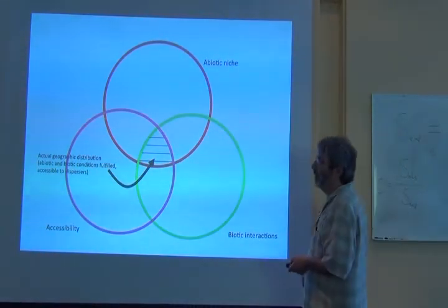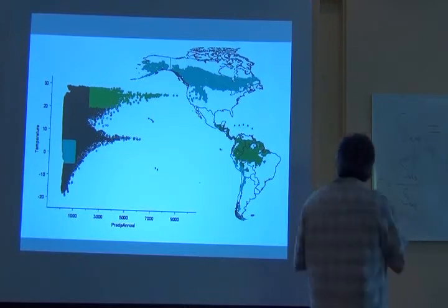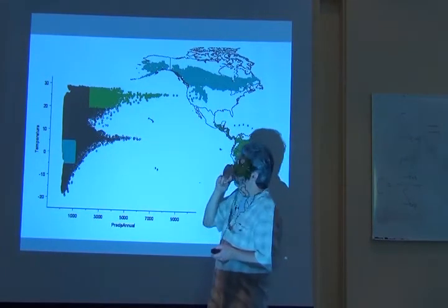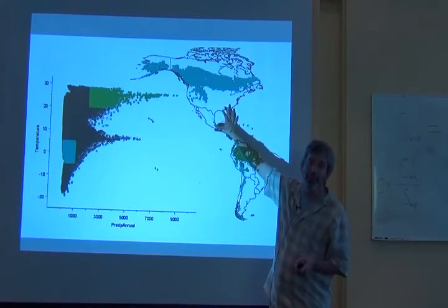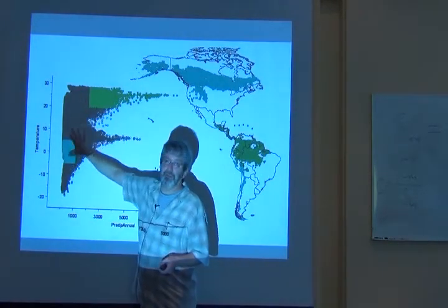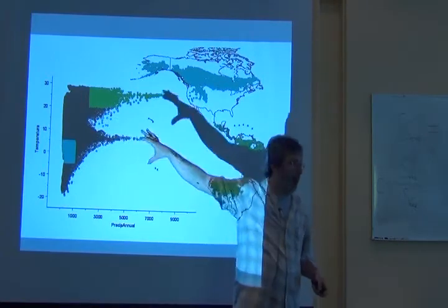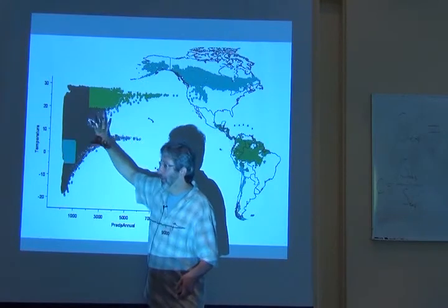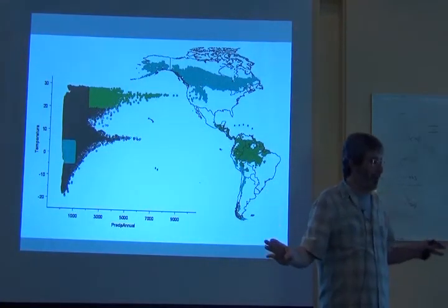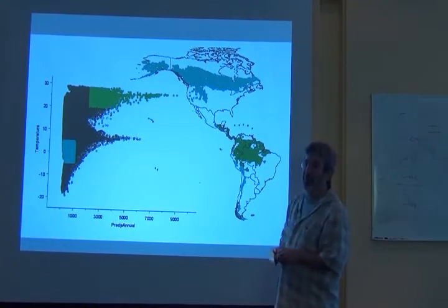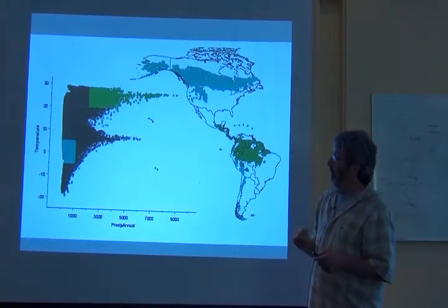But what I want you to think about is this. What we're doing in the niche modeling world is we're essentially using occurrences in geography to identify sets of environments where the species has occurred. We then use some trick to fit a model around the occurrences in environmental space. And then we use that model to come back to geography. That's the whole process. But again, we're not going into this. There's a big set of videos. I think it was like 62 videos from the niche modeling course. Some of you were there.